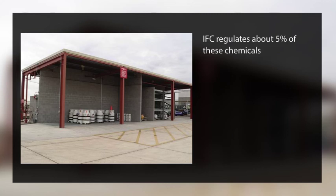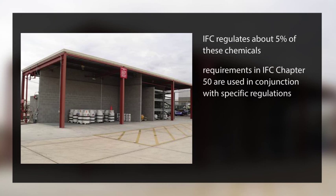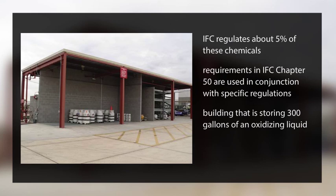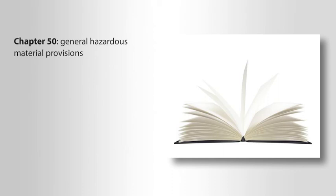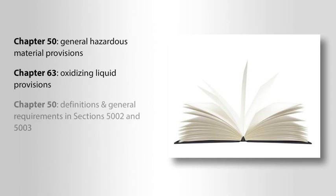The chemicals that are regulated are essential in the manufacturing of numerous consumer and industrial products. The requirements in IFC chapter 50 are used in conjunction with the specific regulations for each class of hazardous materials regulated. For example, consider a building that is storing 300 gallons of an oxidizing liquid — proper code application would require the enforcement of the requirements in IFC chapters 50 and 63.